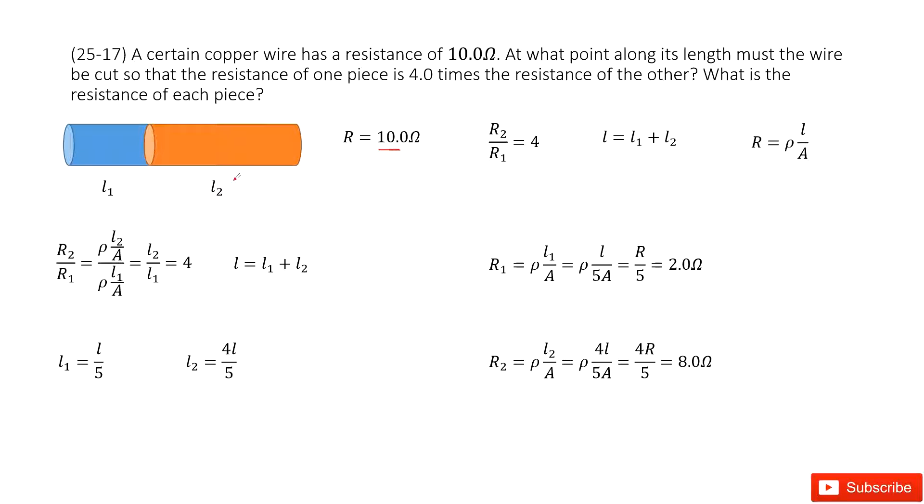We find the resistance R2 is 4 times the resistance R1, so we write down R2 over R1 equals 4. Now the question asks, what is the resistance for each piece?